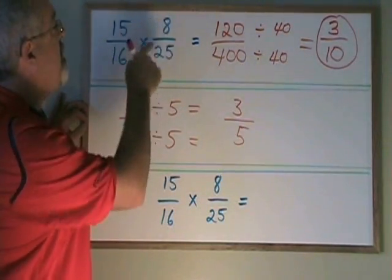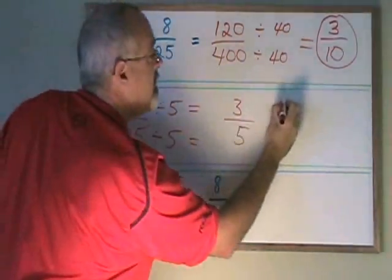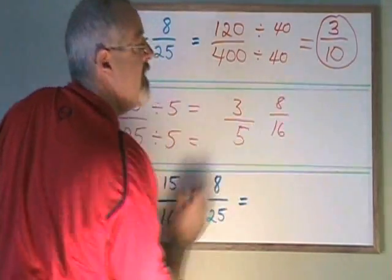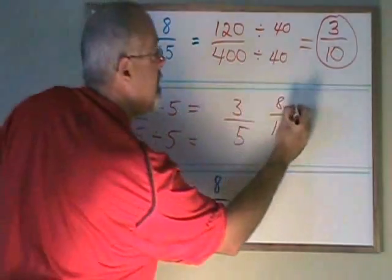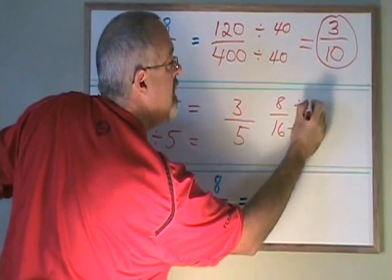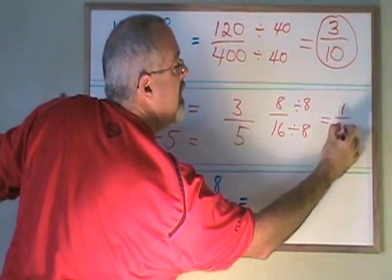And we can do the same thing with 8 over 16. If we have 8 over 16, they have a common factor of 8. We can divide both top and bottom by 8 and we get 1 half.